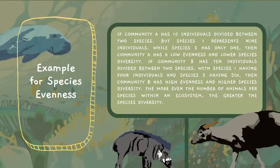For example, if community A has 10 individuals divided between two species, but species one has nine individuals and species two has only one, then community A has low evenness and low species diversity. If community B has 10 individuals divided between two species — species one with four and species two with six — then community B has high evenness and higher species diversity. The more even the number of individuals per species, the greater the species diversity.